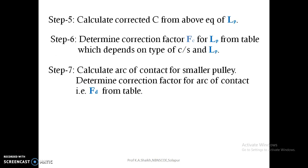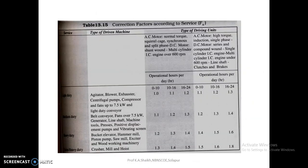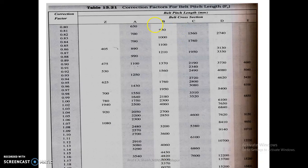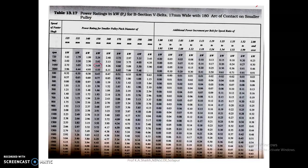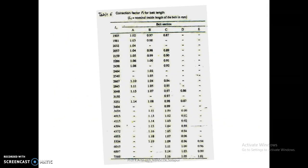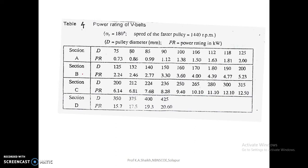An alternative table for Fc is available in the Bhandari textbook. For type B cross section and a pitch length Lp of 1560, the correction factor Fc is 0.92, which is what we have selected for our case. Whether the table is based on Lp or Li, find the appropriate inside or pitch length and select the corresponding correction factor Fc.